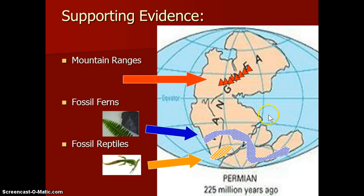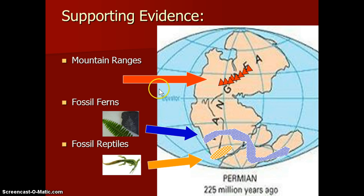If you put the continents back together into this Pangaea form, we start to see some pretty strong evidence. Three lines of evidence that really stand out are: if you take mountain ranges from Europe and line up Europe with North America, you can see specific features — rock types, ages, and dating — that match up exactly, just like puzzle pieces. The same thing applies to certain fossil plant records, which are found in such distinct patterns that when you put the continents back together into Pangaea you can trace them continuously from one continent to the other. And the same thing with a few fossil reptiles. This was very strong evidence for what we now know scientifically to be correct.